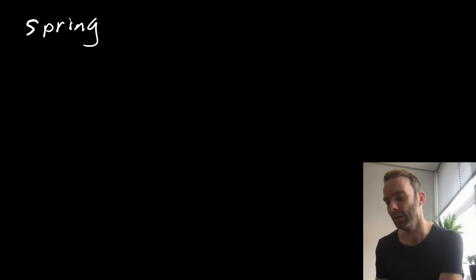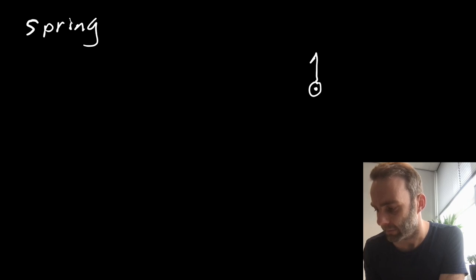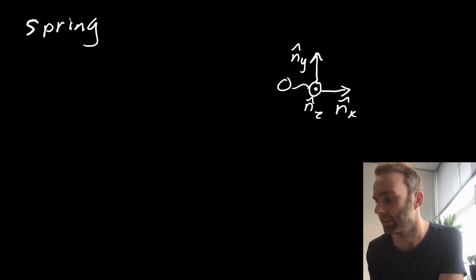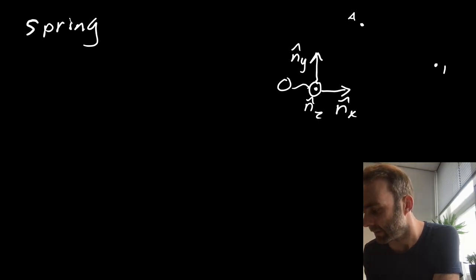Another example of where we have potential energy is a spring. And to explain how we can get the potential function of a spring, I start again with some inertial frame. So let's also give this a name O.